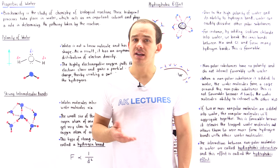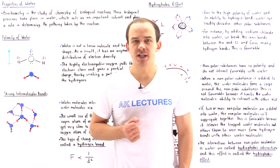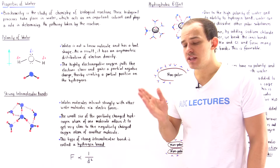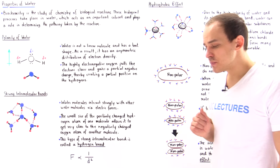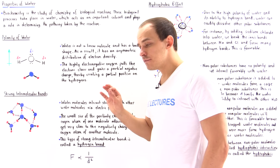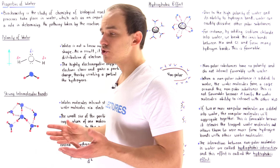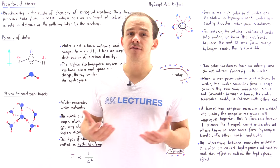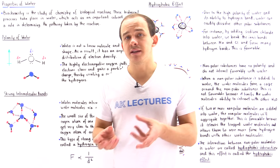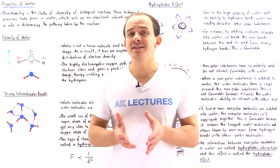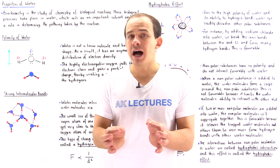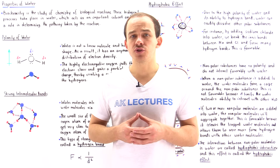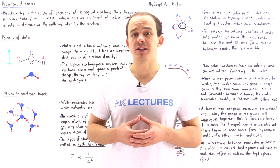Biochemistry is the study of the chemistry of the many different types of biological reactions and biological processes that take place in nature. The majority of the different types of biological reactions that exist in nature, for example in our body and inside the cells of our body, exist in water. So water is the natural solvent — it's the solvent that allows all these different types of biological reactions to actually take place in the first place.